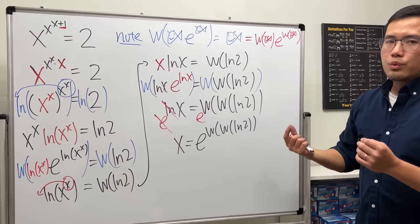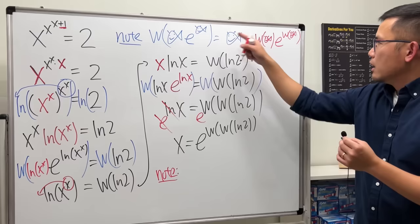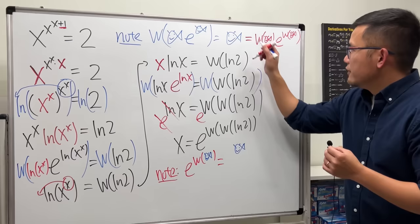So, what do I do with this? Check this out. I'm going to just divide this part on both sides. So, I'll just put on a little note right here for you guys. Note: e to the Lambert W function of the fish is equal to the fish divided by the Lambert W function of the fish, like this.